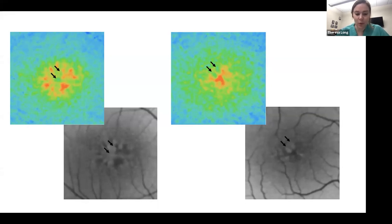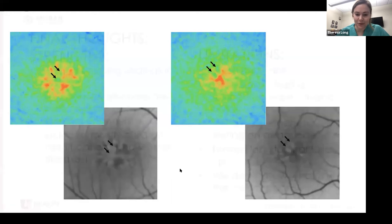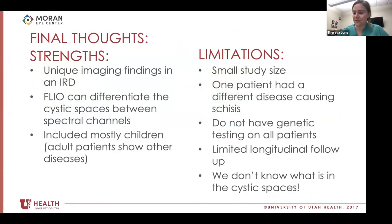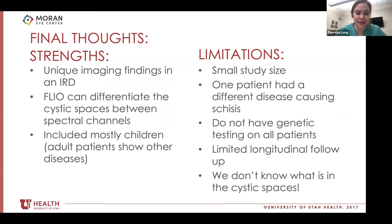Some strengths of this project: FLIO presents unique imaging findings in inherited retinal diseases, and this is also true in X-linked retinoschisis. It can differentiate the cystic spaces between the spectral channels. Another strength is that it includes mostly children — adult patients in FLIO can show other diseases later in life, so it was unique to have such a young population. Limitations include small study size, the inclusion of a patient with Wagner syndrome who may have skewed results, we don't have genetic testing on all patients, and we have limited longitudinal follow-up.